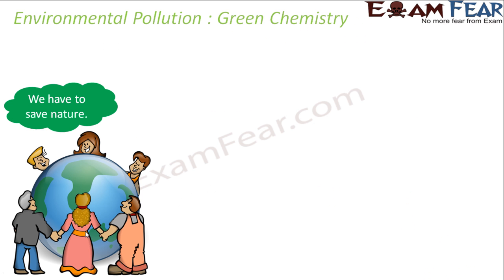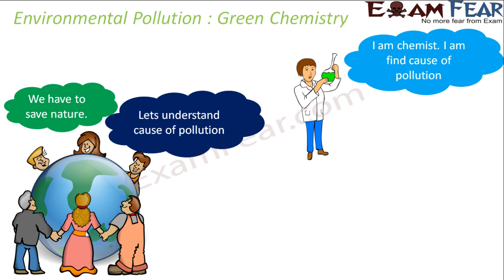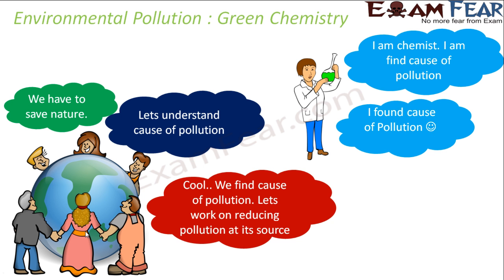The next is green chemistry. Green chemistry is about understanding the cause of pollution and then working to reduce the pollution at its source. Chemists identify the causes of pollution and then implement ideas to reduce it. The basic concept of green chemistry is to reduce the pollution at its source — please note that.